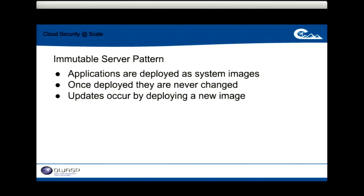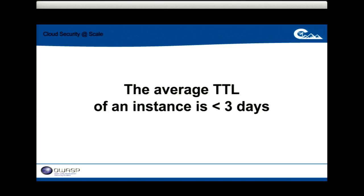When we make changes, we make new images — that's the immutable server pattern. This leads to an interesting factoid: the average time-to-live of an instance in our environment is under three days. New code is constantly being pushed out, we're constantly scaling up and down, with new things coming up and old things going down. Very few things are around for more than three days.